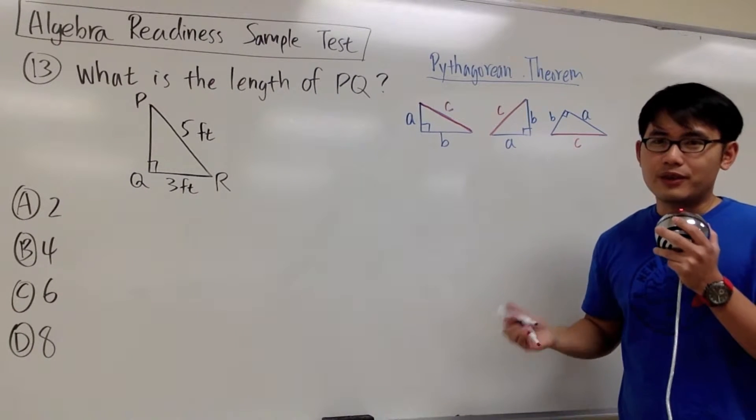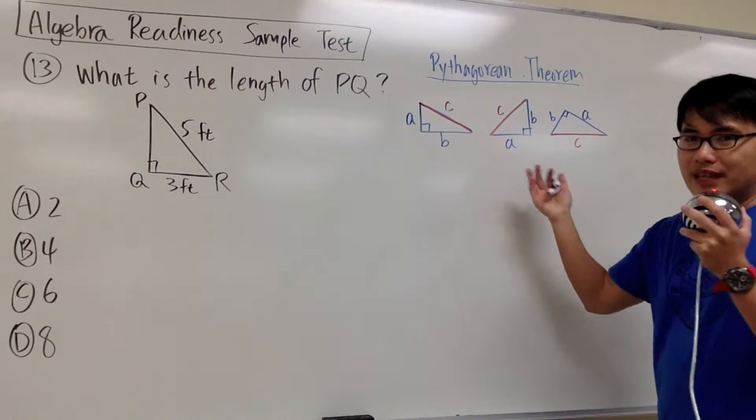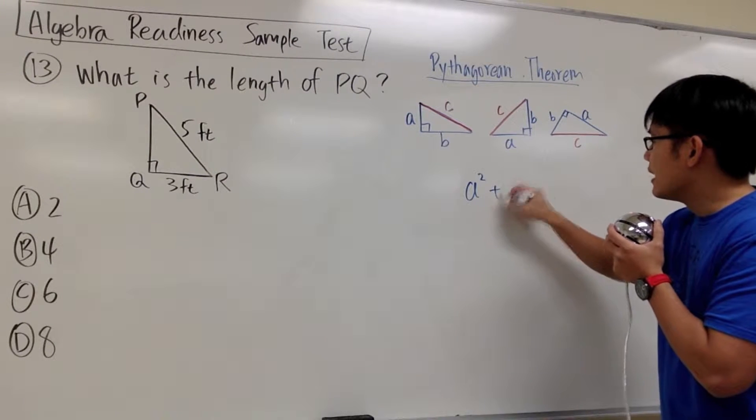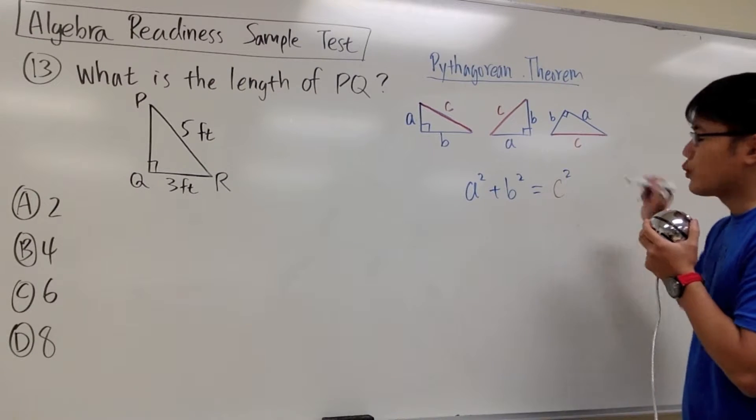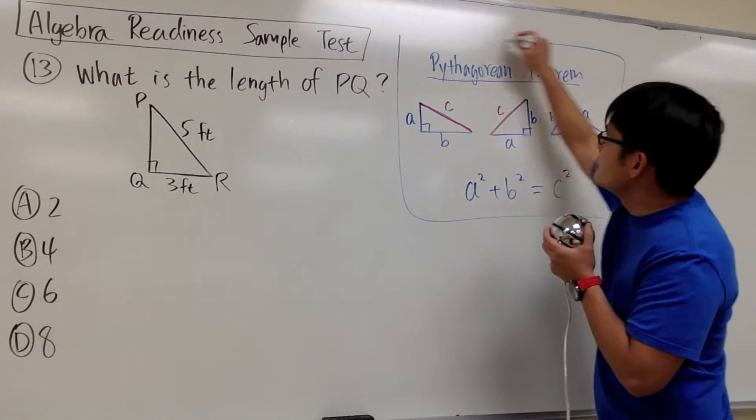Here's the formula for the Pythagorean theorem. It says, for all the right triangles, once you have the labeling correctly, we always get A squared plus B squared, and that will give us C squared. So this is the formula from the Pythagorean theorem.